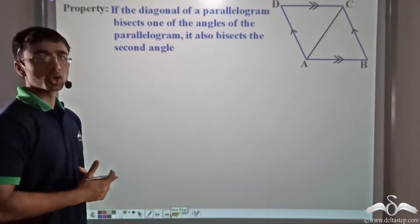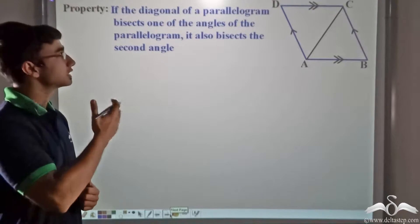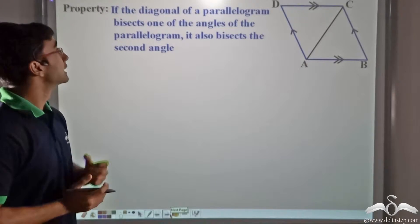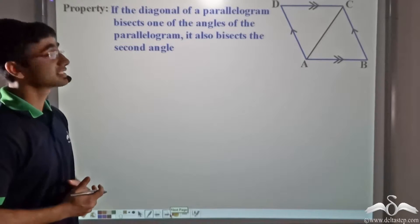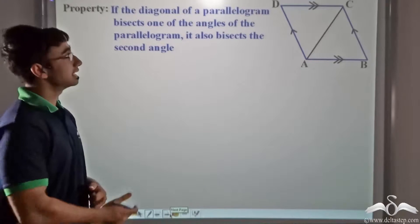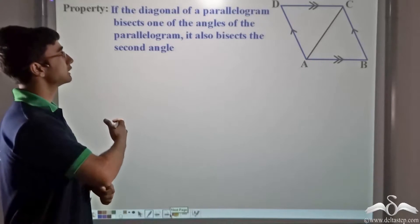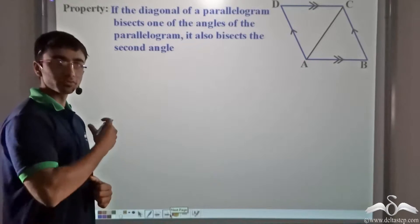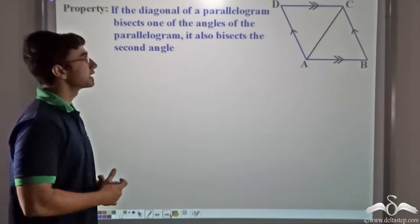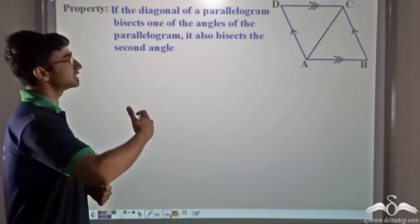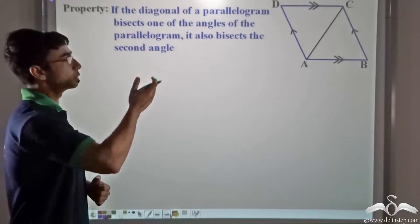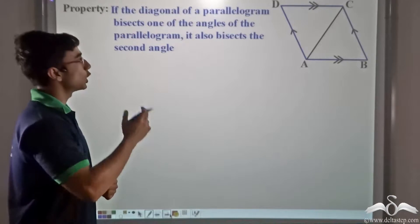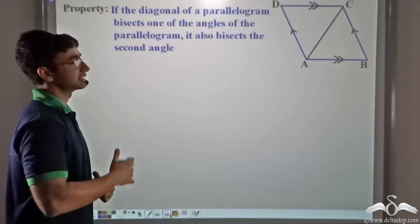Now we're going to talk about another property of a parallelogram. This property states that if the diagonal of a parallelogram bisects one of the angles, then the other angle which the diagonal goes through will also be bisected.